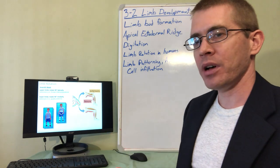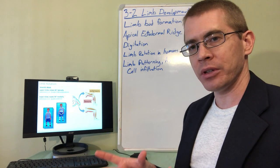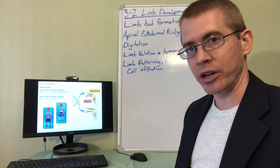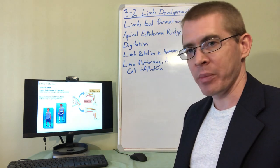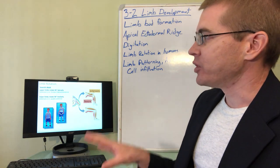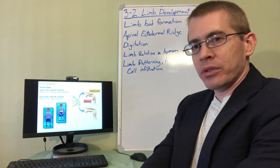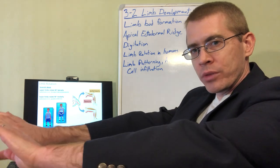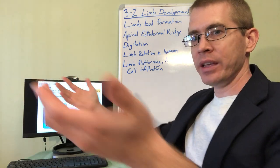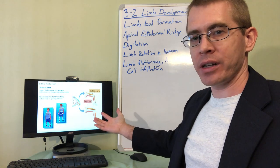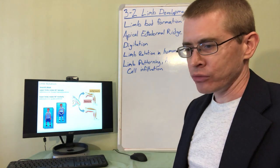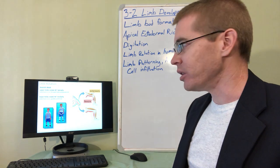When the limb buds have fully developed, the limbs are developing, there is a rotation process that occurs in the development embryologically. So about the seventh week, the upper limbs form like quadrupeds and then rotate laterally to form the anatomical position that we have. The lower limbs rotate medially.